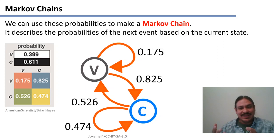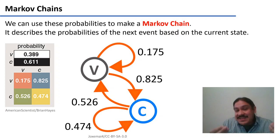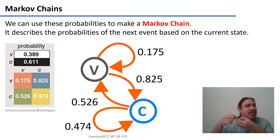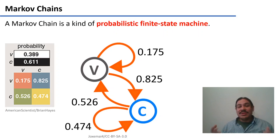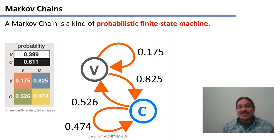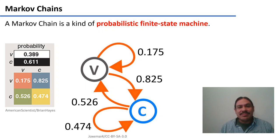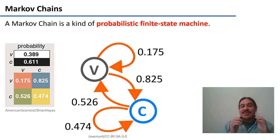This is called a Markov chain. It describes the probability of going into the next event and the next state based on the current state. If you're in a consonant, then you know a little bit about what could possibly happen next. This is a kind of probabilistic finite state machine — finite state because it has states, types of transitions, and input symbols (consonants and vowels), no empty transitions. And it's probabilistic, like in the example of the weighted finite state transducers, because we have some information about where the states are going to go.